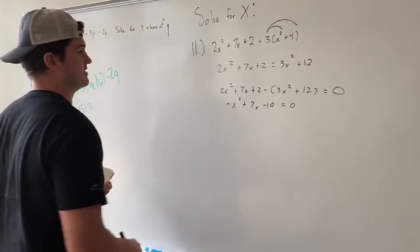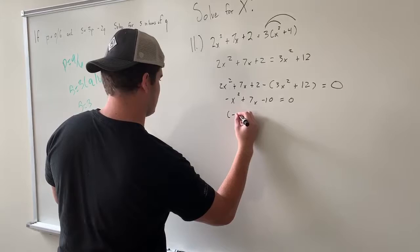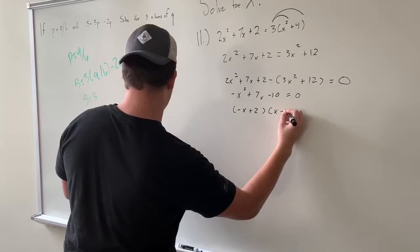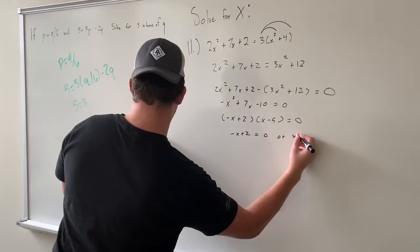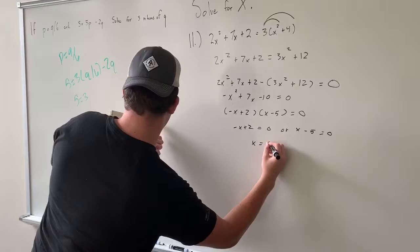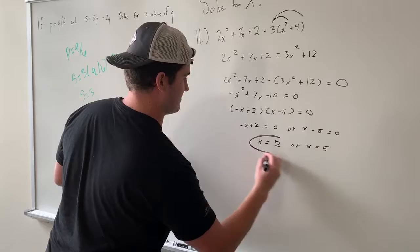Alright, so now, we're going to want to factor it. So, 0, and now, we're going to get plus 2 equals 0, or x minus 5 equals 0. So, also, it can be x equals 2, or x equals 5.